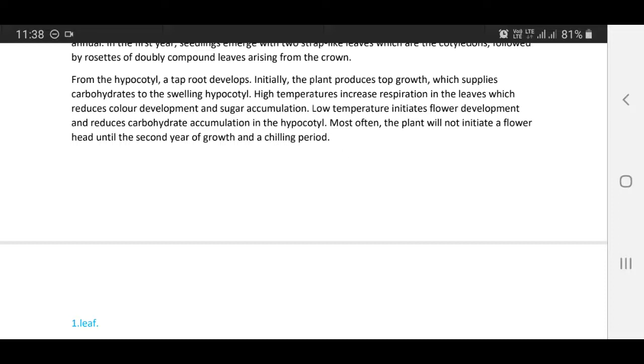High temperatures increase respiration in the leaves, which reduces color development and sugar accumulation. Low temperature initiates flower development and reduces carbohydrate accumulation in the hypocotyl. Most often, the plant will not initiate a flower head until the second year of growth and chilling period.